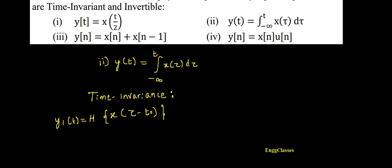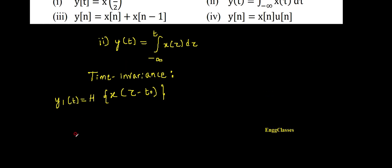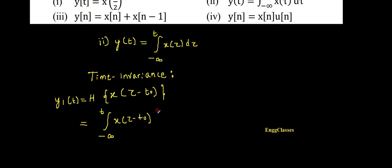So what is the output going to be? That depends on the nature of the system. Whatever input you feed in, it takes the integration of that and gets the output. In this case it takes the integration from minus infinity to t of the input, which is x(τ - t0) dτ. So this is y1(t).